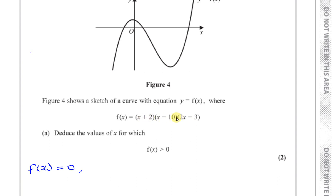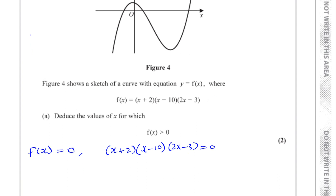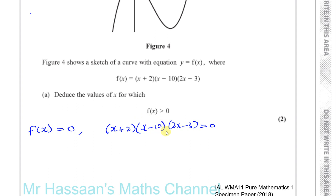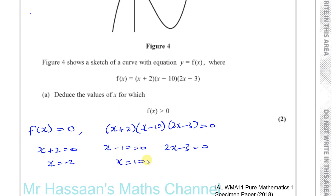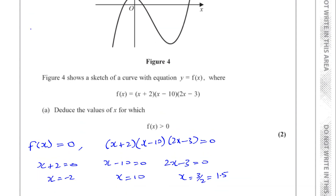We know the equation of the curve is already factorized for us. So if f of x equals 0, that means x plus 2 times x minus 1 times 2x minus 3 is equal to 0. By the zero product property, if you have the product of two or more factors being 0, then one of those factors must be 0. So either x plus 2 equals 0, or x minus 1 equals 0, or 2x minus 3 equals 0. That gives us x equals minus 2, or x equals 1, or x equals 3 over 2, which is 1.5.